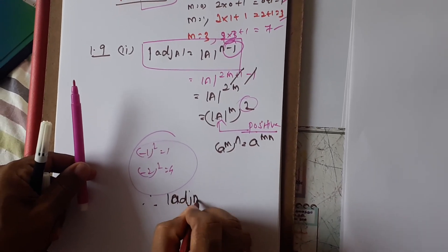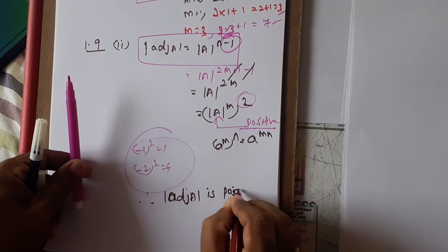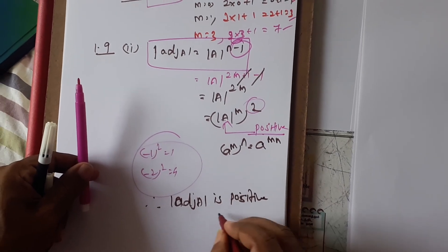Therefore we can say the given condition, determinant of adjoint of A, is positive. Hence proved.